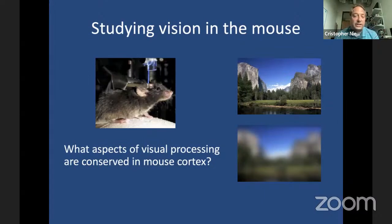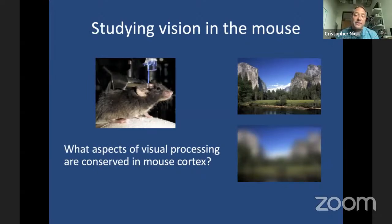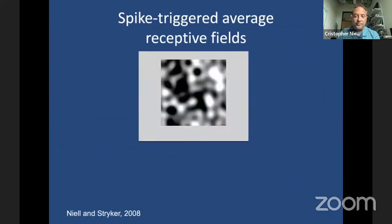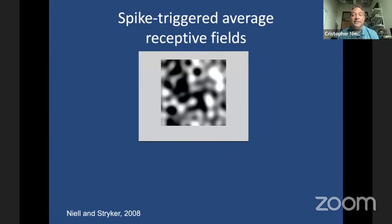I did a series of recordings from mouse V1, looking at properties like orientation selectivity and contrast invariant tuning, and found that most of these, to first order, were indeed conserved in the mouse. The one I want to tell you about today was the spatial structure of receptive fields — what's the pattern of light and dark that causes the neuron to fire? This idea of mapping receptive fields will come up multiple times in today's talk.